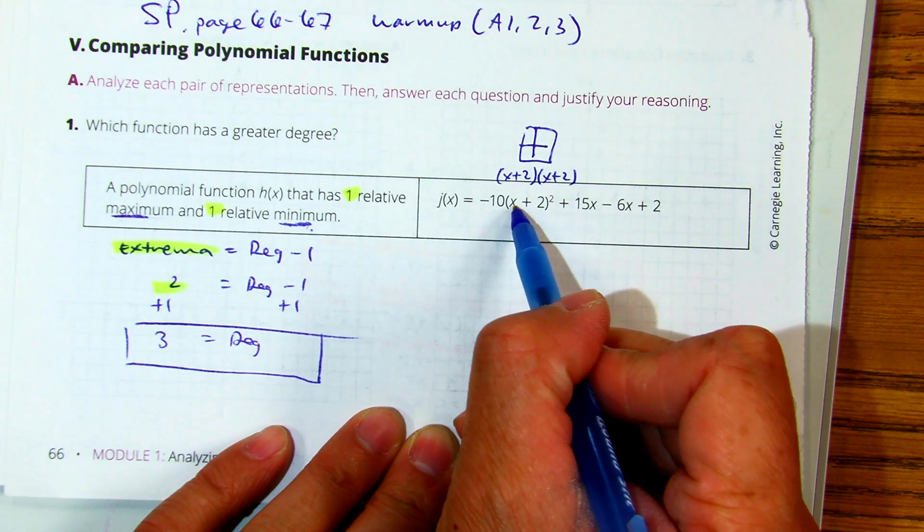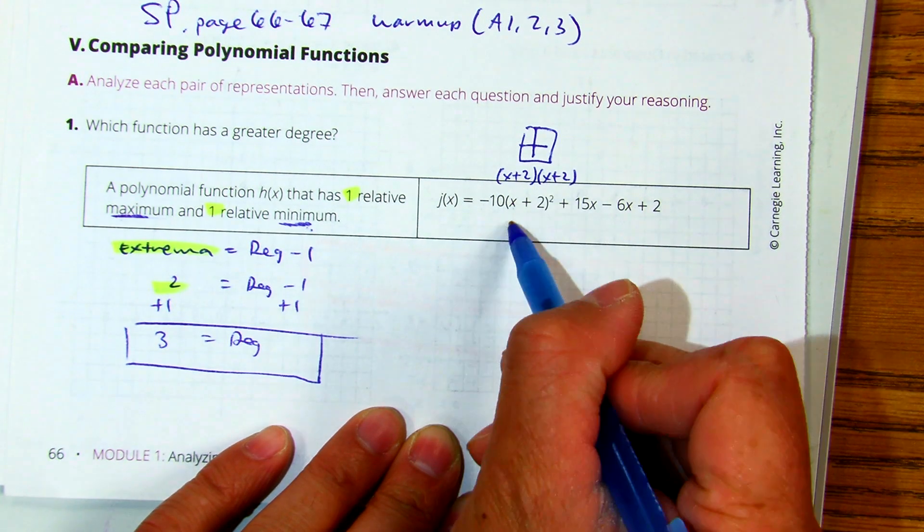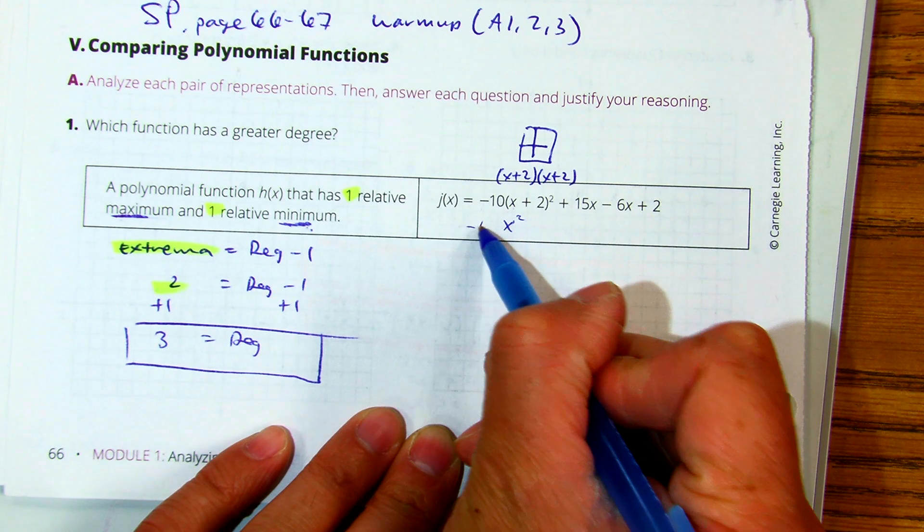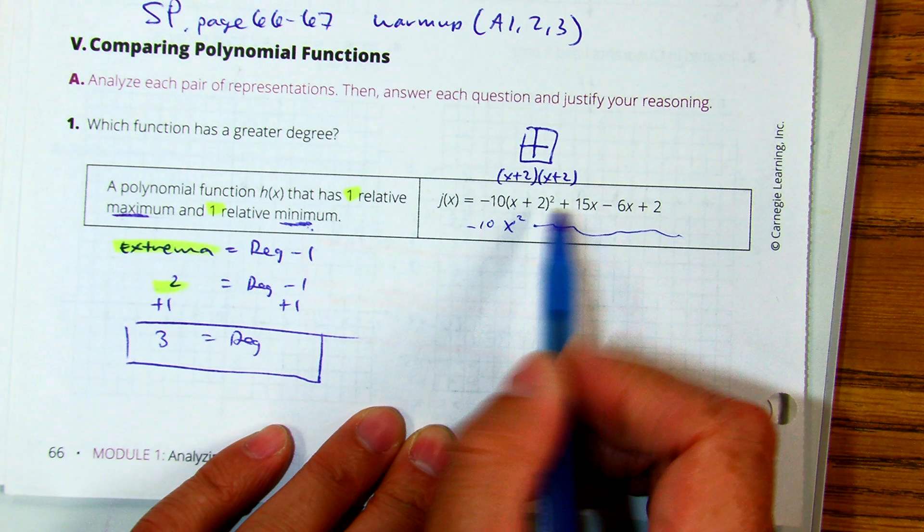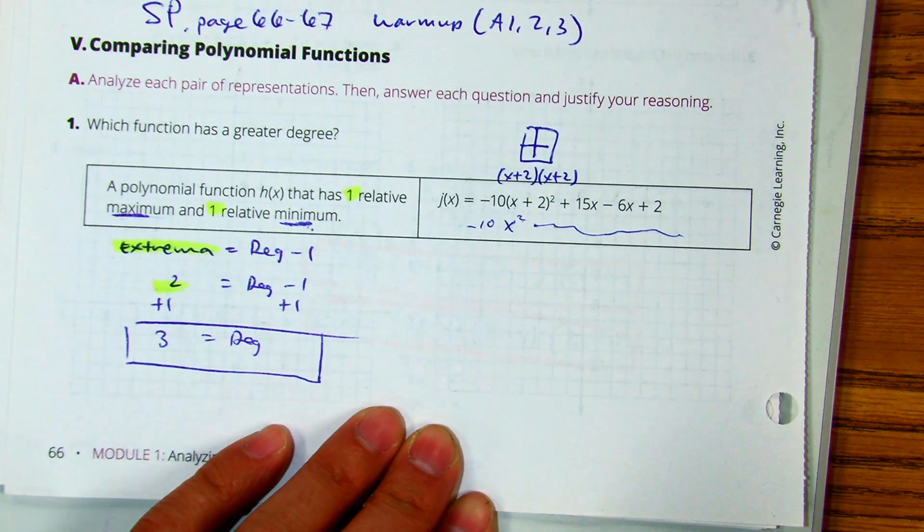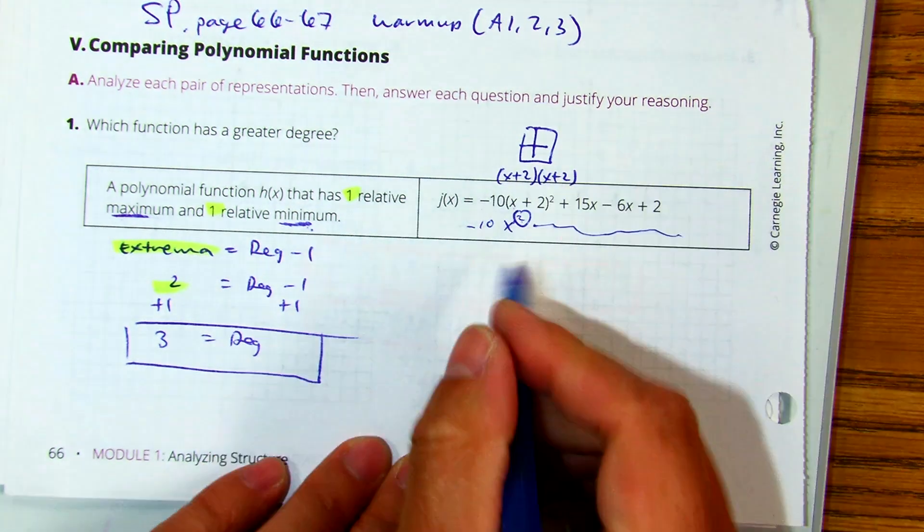The easiest way is just recognizing that it's going to be x squared and a negative ten. So yes, you're going to have a bunch of other stuff in the polynomial, but the highest degree there is a two.